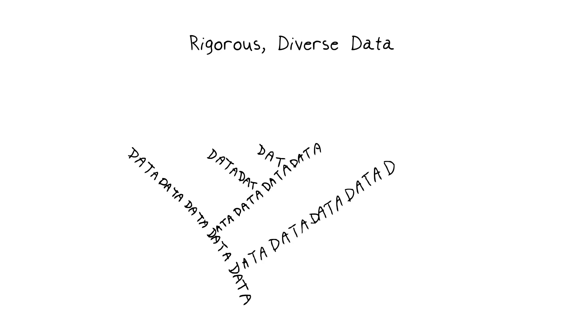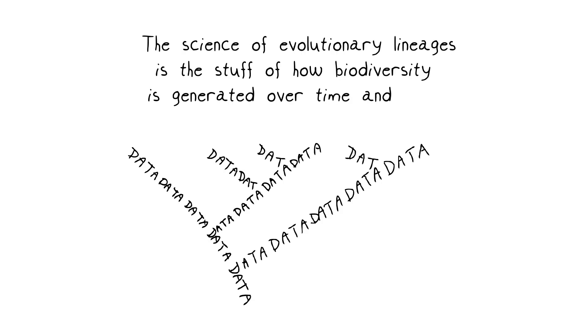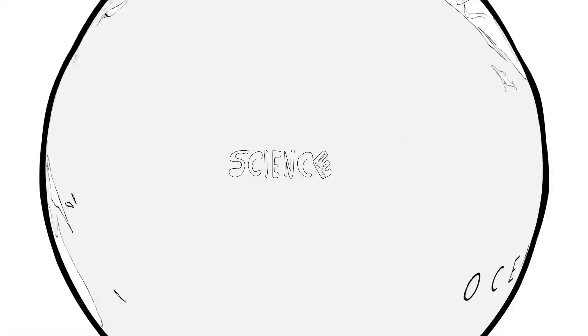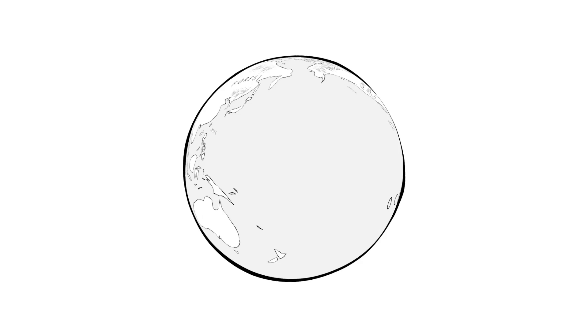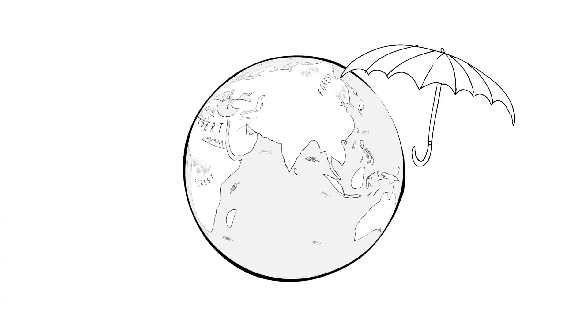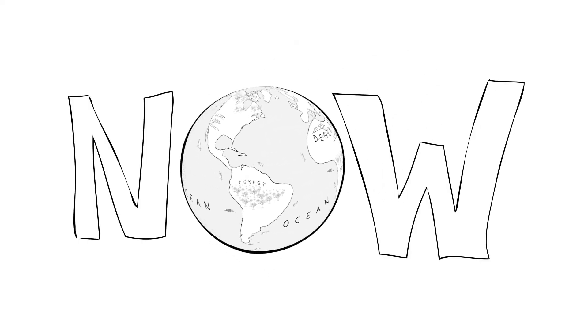Conservation genetics is a different, potentially powerful way of looking at conservation techniques, and a new way of assessing the value of protecting and conserving different ecosystems — essentially another tool in the conservation tool belt. Any big-picture, inclusive conservation approach such as this requires rigorous, diverse data that rely on the science of evolutionary lineages — the stuff of how biodiversity is actually generated over time and space. All this science helps us better understand what types of organisms are most crucial to a given area or lineage, and how biodiversity protection can most effectively be served by the right conservation techniques — techniques that we need now more than ever.